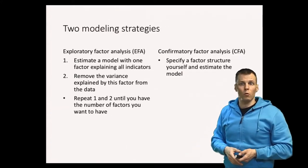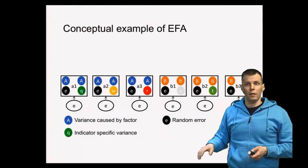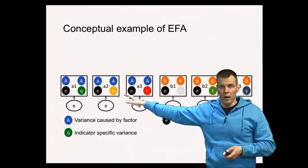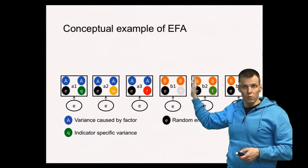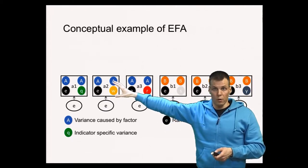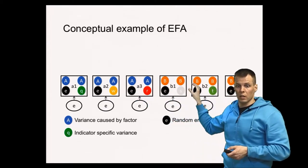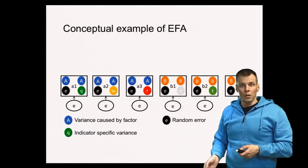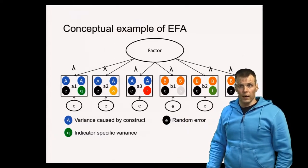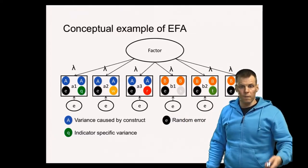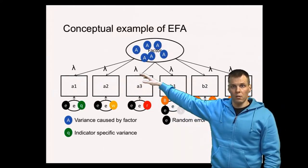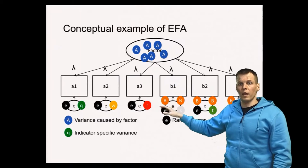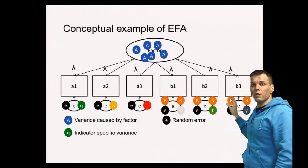So what does the process look like? We have the data here, so we have this A variance here due to A construct, B variance due to B construct, and we want to know how much of the variation of these indicators is due to the A construct and the B construct. We first fit a single factor model, and let's say that this single factor now picks up all the A variance. So all the A variance goes to the factor, and the remaining variance will go to the error term.